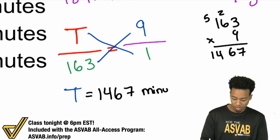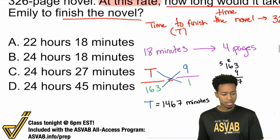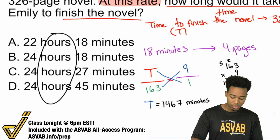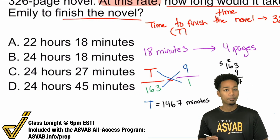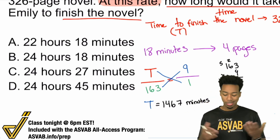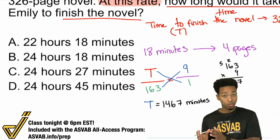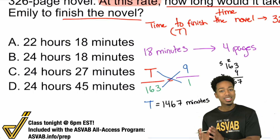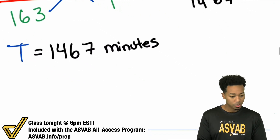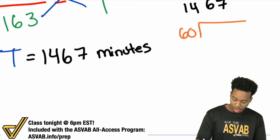So it takes 1467 minutes. But if you look at the answer choices, they show hours and minutes, not just minutes. So we need to convert 1467 minutes into hours and minutes. We divide by 60, since every hour is 60 minutes. To go from minutes to hours, we see how many times 60 fits into 1467, and the remainder will be the leftover minutes.